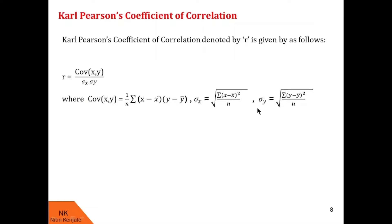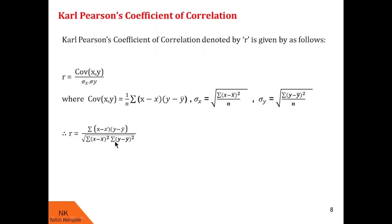Similarly, sigma y denotes the standard deviation of values of y and is given by the square root of summation of y minus y bar whole square divided by n. When we substitute these formulas, we get r is equal to summation of x minus x bar into y minus y bar, whole divided by the square root of summation of x minus x bar square into summation of y minus y bar square.